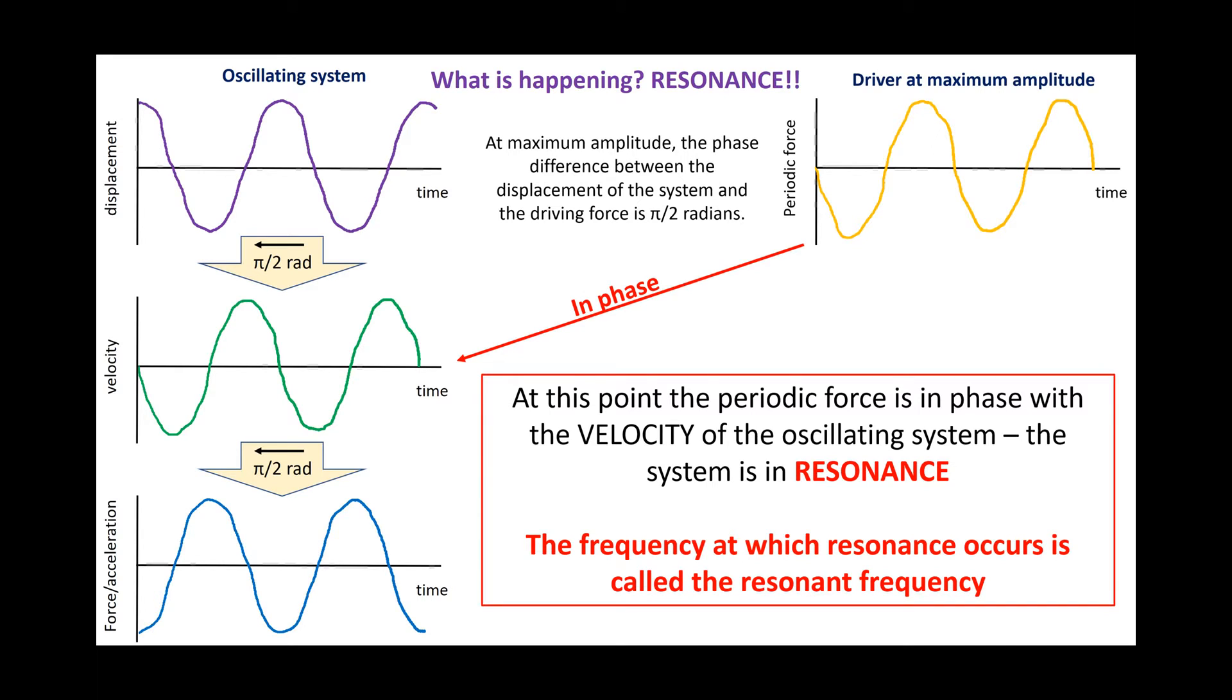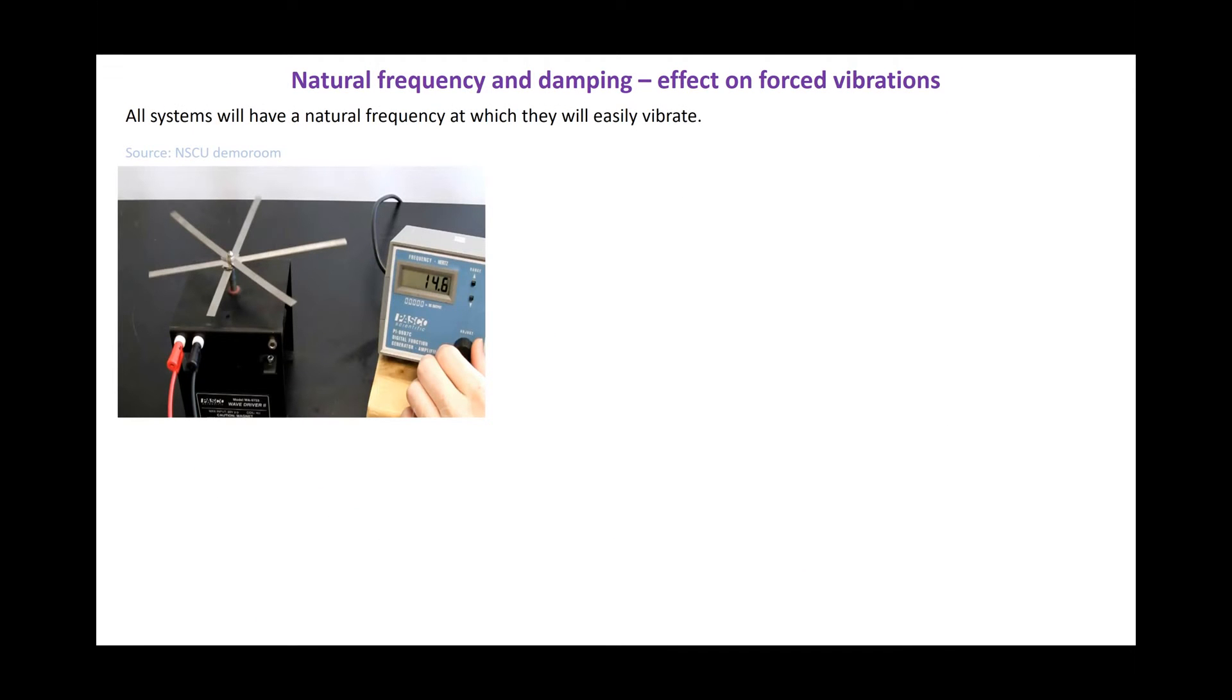We call the frequency at which resonance occurs, the resonant frequency. Now, there's another type of frequency that we need to be aware of, and that's the natural frequency. All systems will have a natural frequency at which they will easily vibrate.